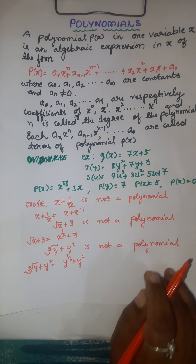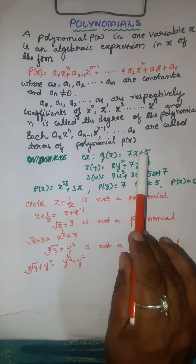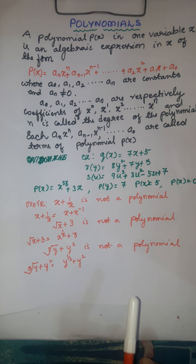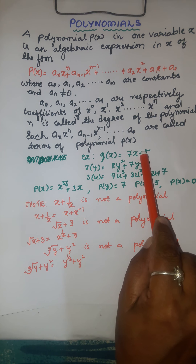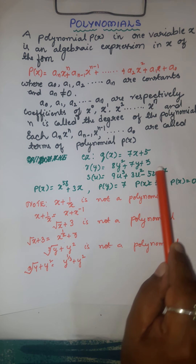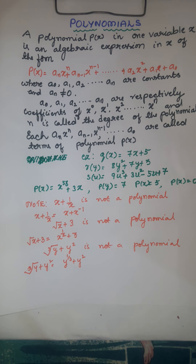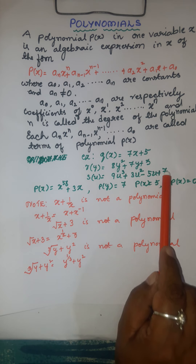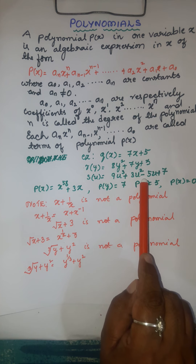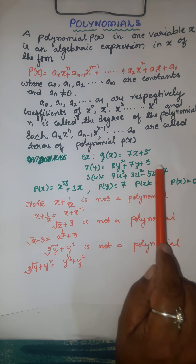So, in order to call an algebraic expression a polynomial, the variables involved should have positive integers as their powers. Now, in all these expressions you find the constants 5, 3, 7, 5, 0 — they are all called constant polynomials. Here, 7, 5, 7, 3, 5 are non-zero constant polynomials, and 0 is the zero polynomial.